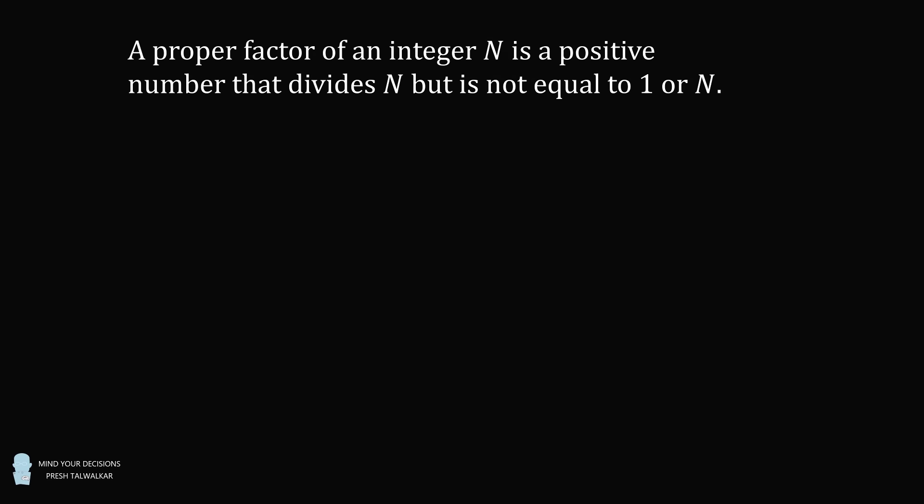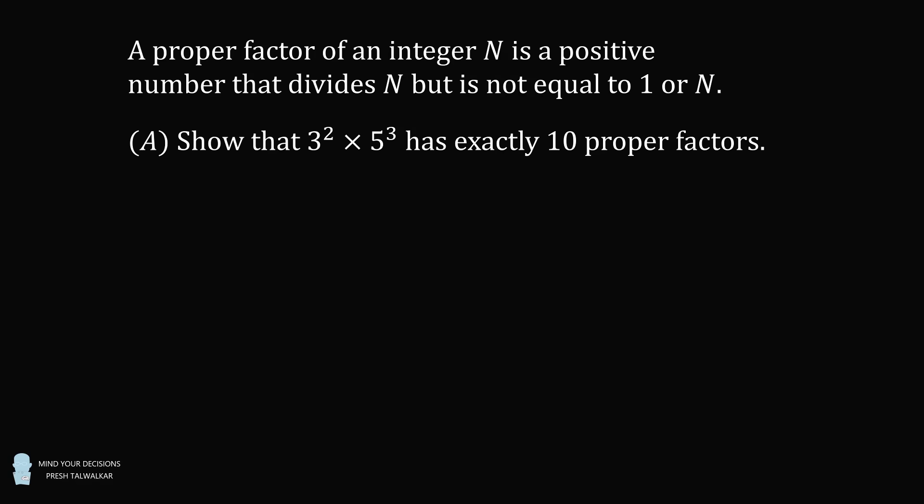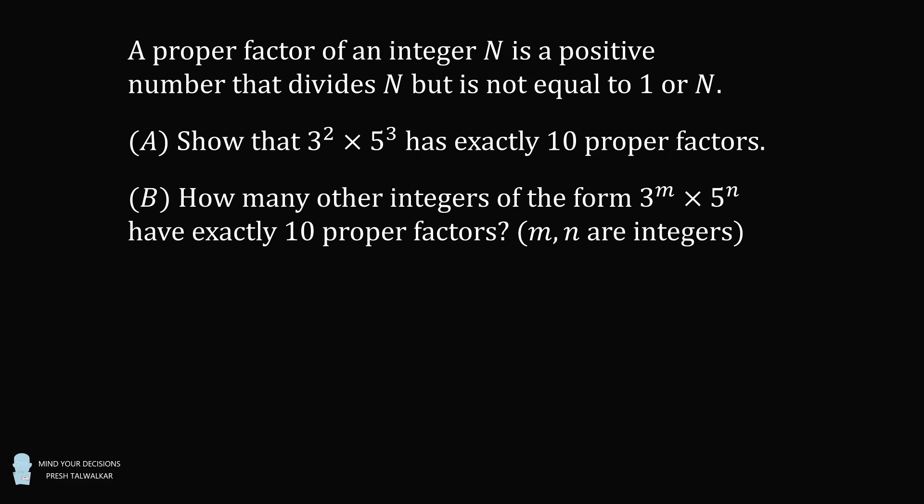A proper factor of an integer n is a positive number that divides n but is not equal to 1 or n. Part A: Show that 3 squared times 5 cubed has exactly 10 proper factors. Part B: How many other integers of the form 3 to the m times 5 to the n have exactly 10 proper factors?